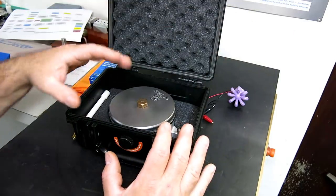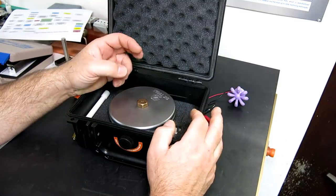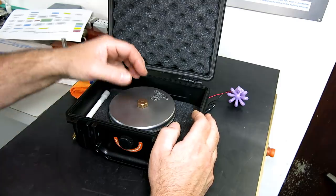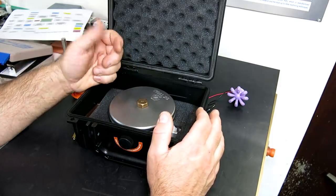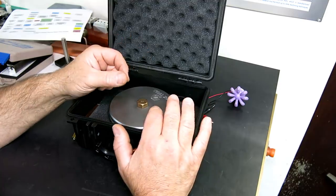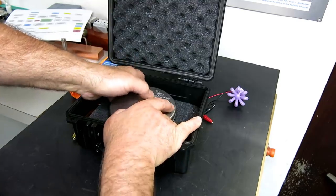So what we have here is a Kingsbury Mitchell tilting pad bearing. This particular one is an aerodynamic bearing, meaning it's an air bearing or a fluid film bearing and the fluid in this case being air.